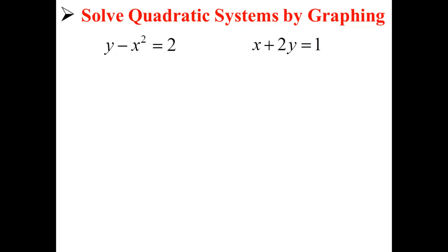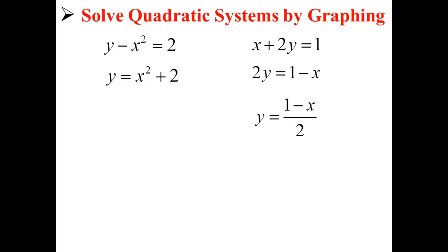Let's take our two equations and get them ready for graphing. The first one we solve for y: we have y equals x squared plus 2. The second we work out and also solve for y: now we have y equals 1 minus x over 2.